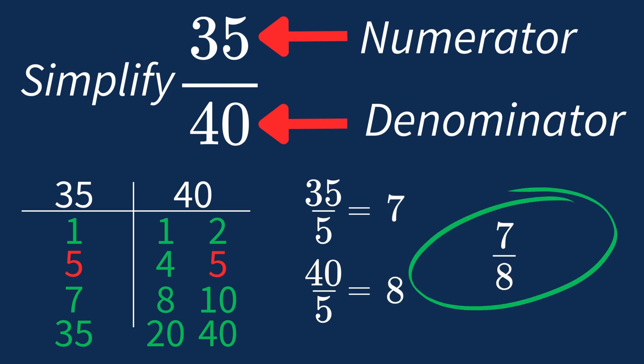And we know that 7 over 8 is in its simplest form, because the only common factor between 7 and 8 is 1. And when 1 is the largest common factor, we know that fraction is already in its simplest form. Thank you for watching, and I'll see you in the next one.